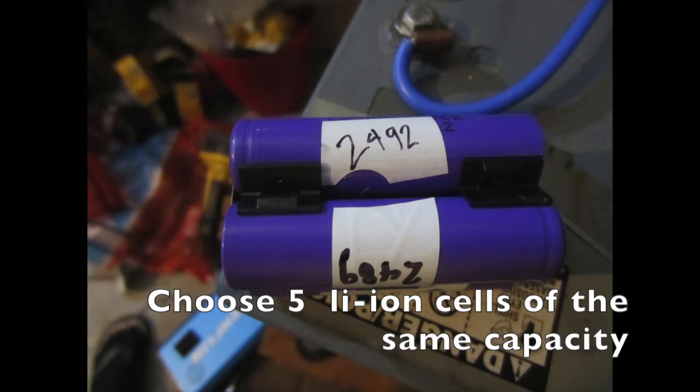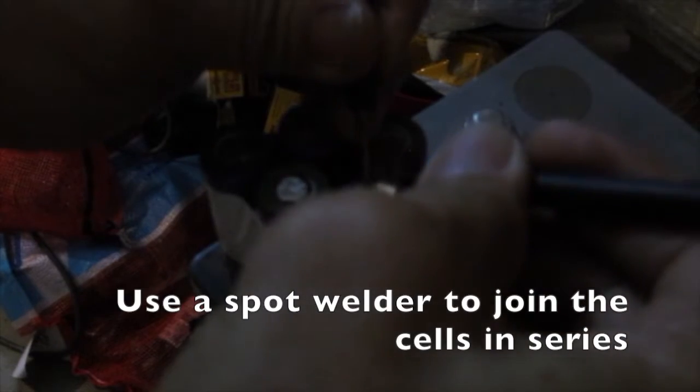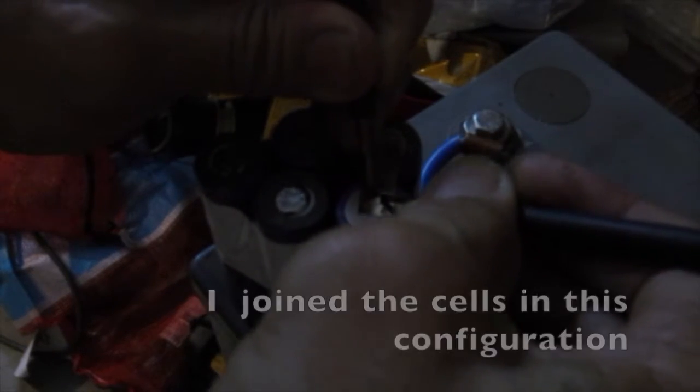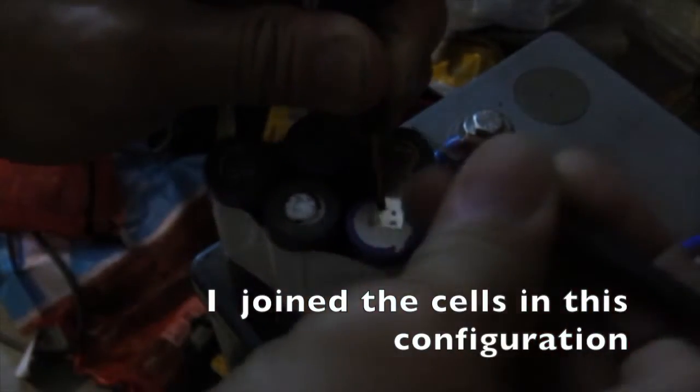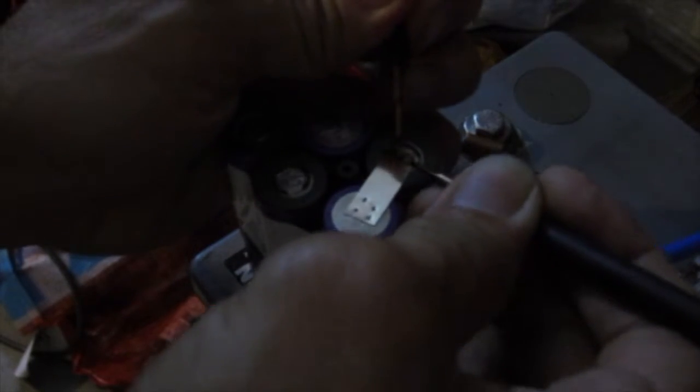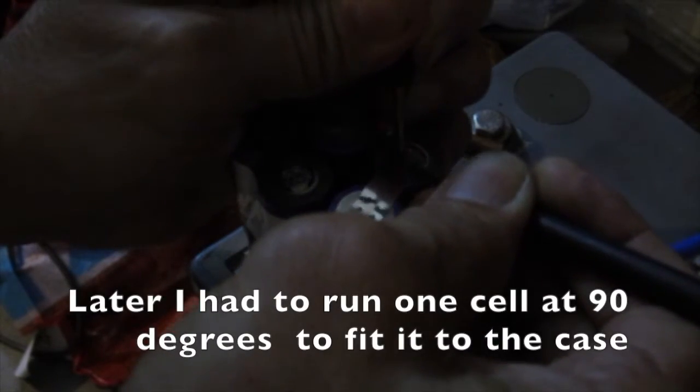Choose 5 lithium ion cells of the same capacity. Use a spot welder to join the cells in series. I joined the cells in this configuration. Later I had to run one cell at 90 degrees to fit it into the case.